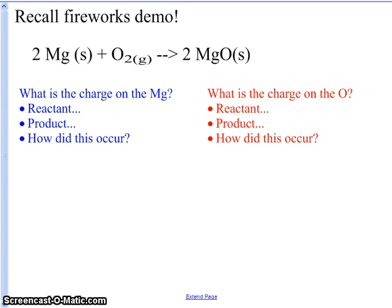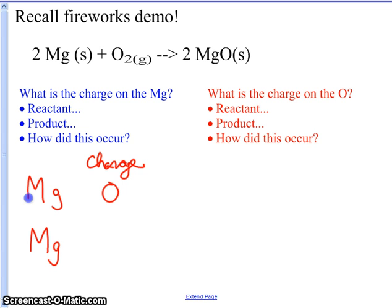We have the reaction summarized here and we're going to focus on the two elements involved in this change. First, let's start with magnesium. Magnesium as an element — earlier in the year we learned that all elements in their elemental state are neutral. So magnesium as a reactant has a charge of zero. On the product side, magnesium is in a compound, and we remember that magnesium forms ions because it is an alkaline earth metal, of plus two. So the charge on magnesium is plus two.